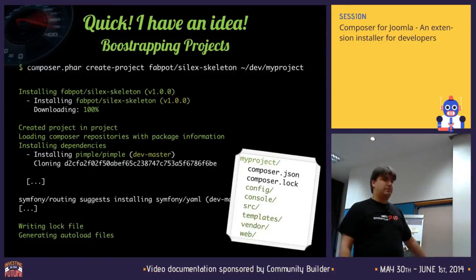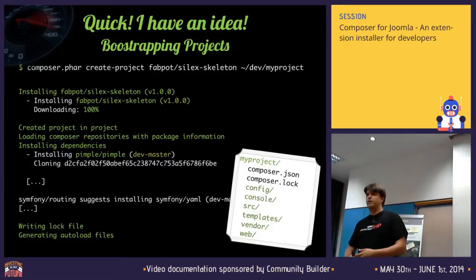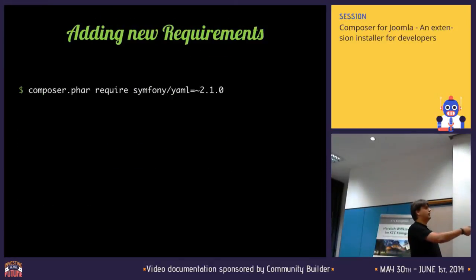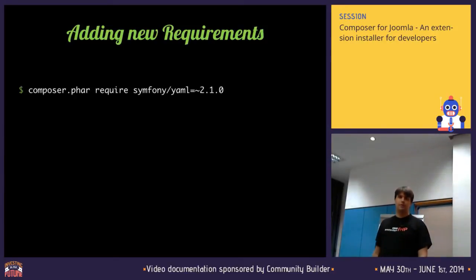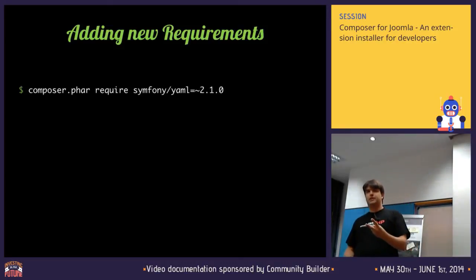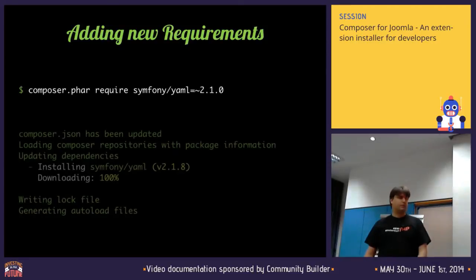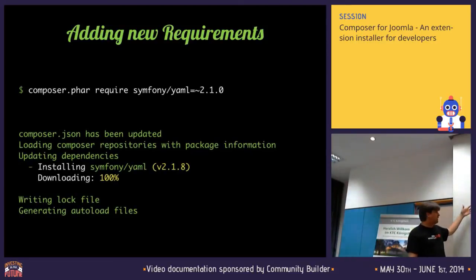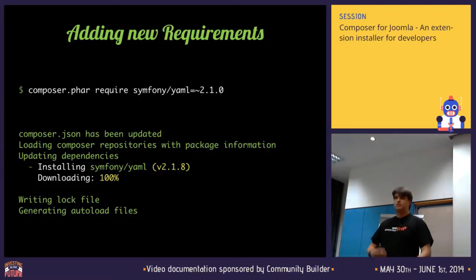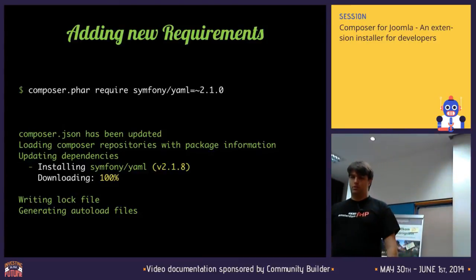You already started doing your project — we've bootstrapped something, we're starting to work — and then we find we're going to need a new library. With Composer you can then require other dependencies. We mentioned that YAML is an option, so we can use YAML-format configuration. You just do composer require symfony/yaml and whatever version. This does two things: one, it updates your composer.json file and adds that requirement physically there, so next time someone installs they'll get that. And two, it downloads the dependency and puts it in your vendor folder.